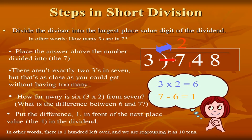Next, steps in long division. I have taken a 3-digit number 748 divided by 3, where 3 is the divisor. First, divide the divisor into the largest place value digit of the dividend — in other words, how many 3s are in 7? In the 3 times table, 7 is not there, so we take the closest number: 3 twos are 6. Write that down and subtract — since division is repeated subtraction, 7 minus 6 equals 1.